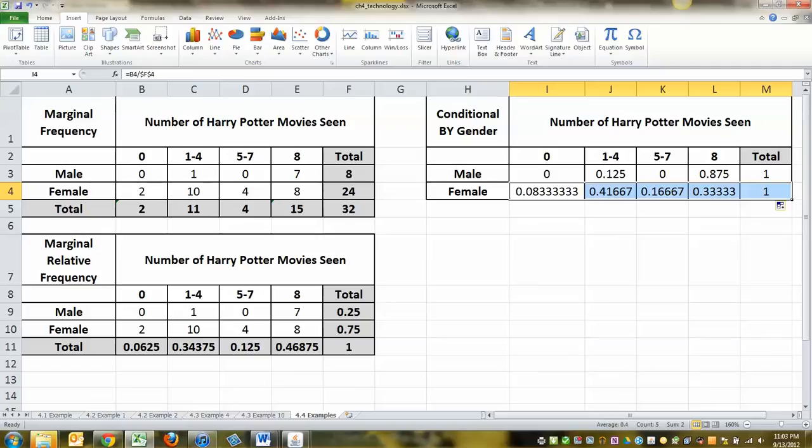Now think about what this means. This means of the guys, when you're just looking at the men, 87% of them had seen all eight movies. But when you're just looking at the women, only 33% had seen all eight movies.